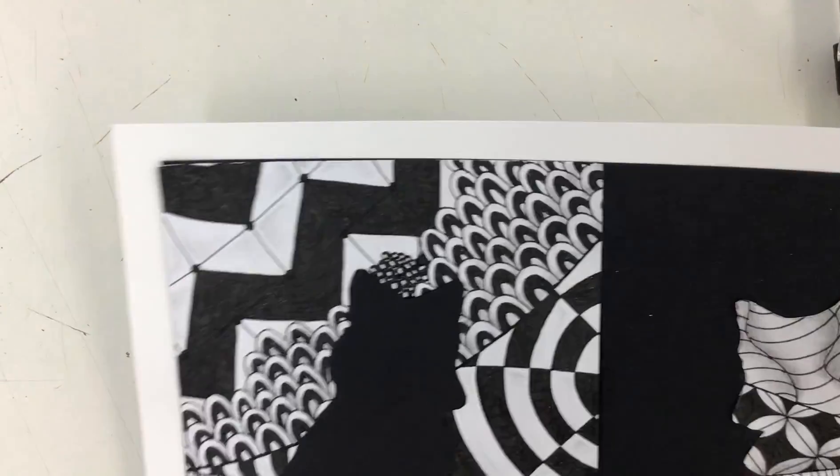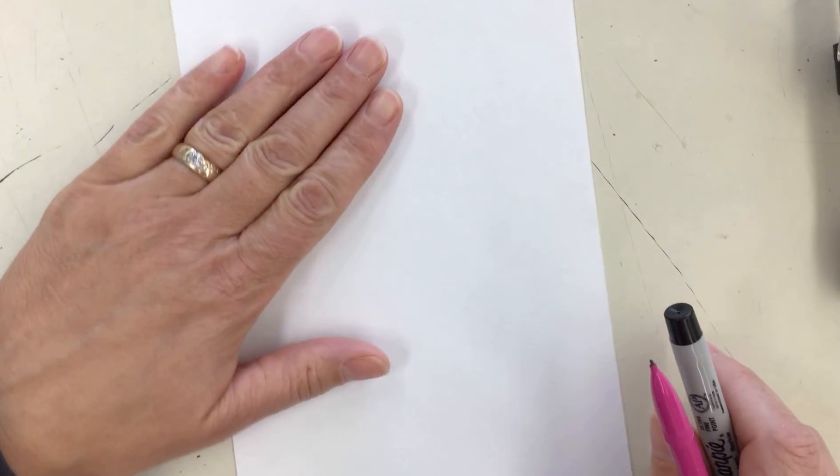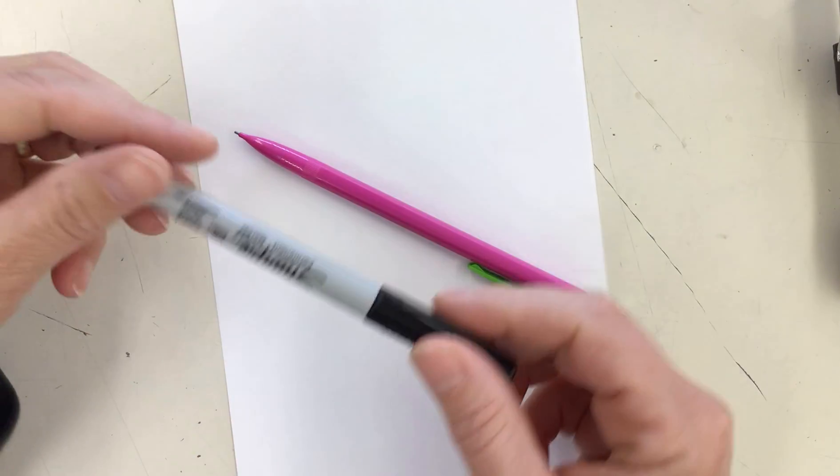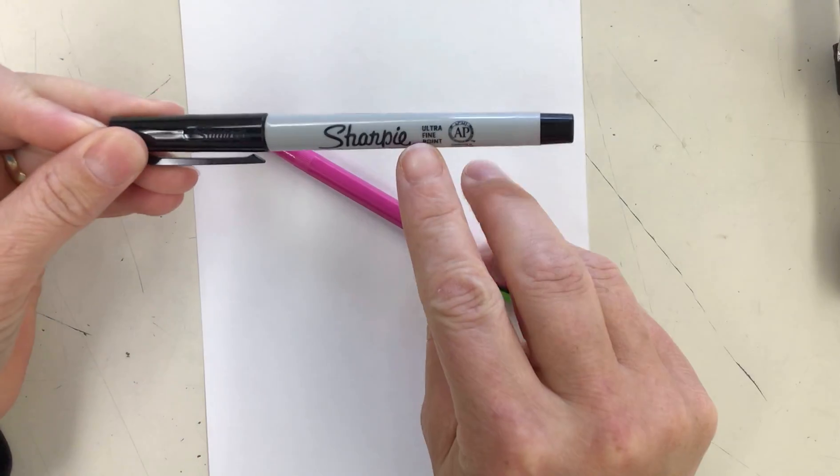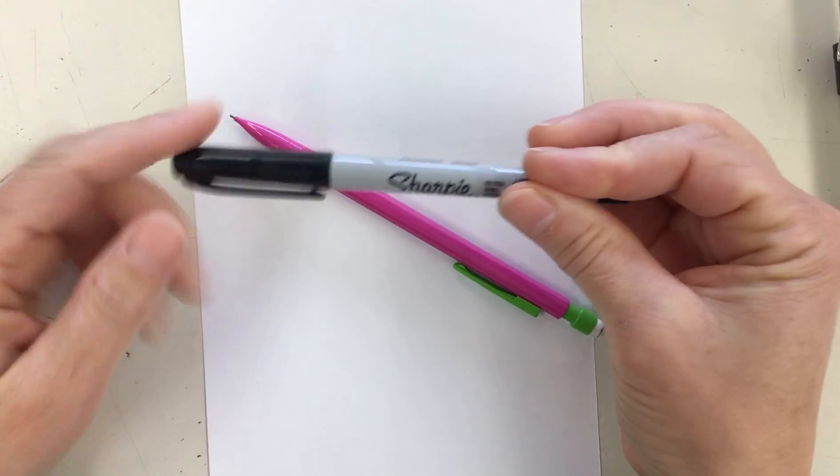You will also need one of the half sheets of drawing paper that I gave you in your packet. You'll need a pencil, just like a number two pencil will work fine, and you'll also need the ultrafine, make sure it's the ultrafine, the ultrafine black Sharpie.